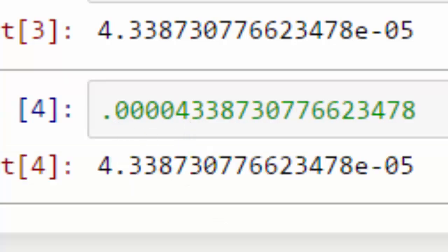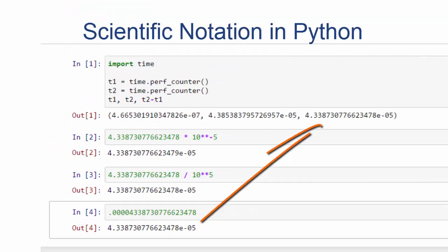And if we run that, you can see we get the same number. And that's how scientific notation works, demonstrated in Python. And that's how it's done.